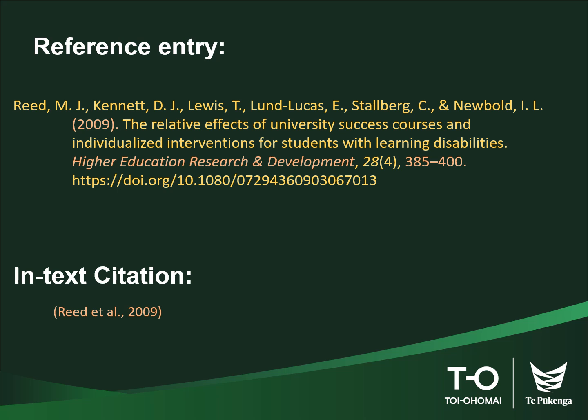Then write the name of the journal in italics with all major words capitalized. After the journal name, write the volume number in italics, and then add the issue number in round brackets — the issue number should not be italicized. After the issue number, put the page range of the article followed by a full stop.